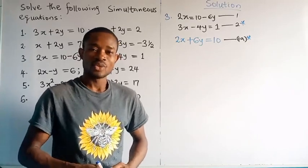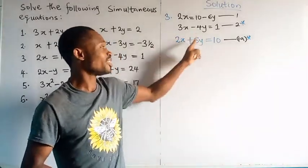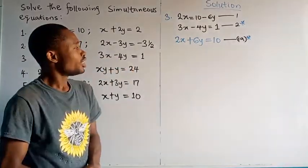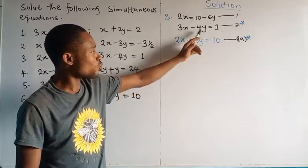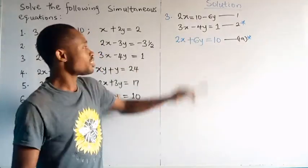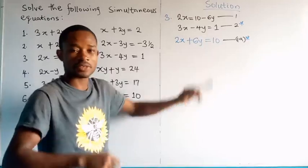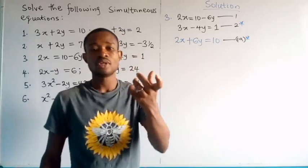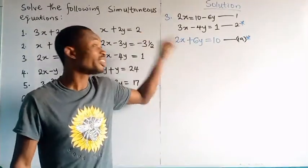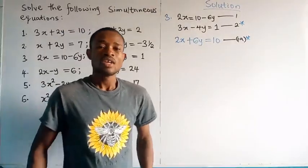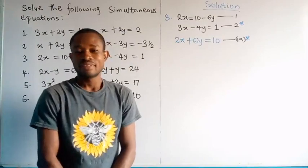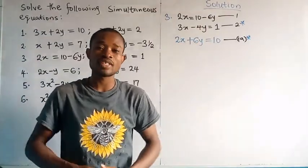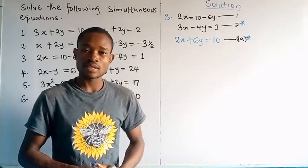Since the signs of y are different, we will add the equations to eliminate y. However, the coefficients of y are not the same — equation 1a has 6y and equation 2 has 4y. To eliminate, we must make these coefficients equal. What is the LCM of 4 and 6? The LCM is 12. We can find it quickly: 6 × 4 = 24, divided by the HCF of 4 and 6 which is 2, gives 12.